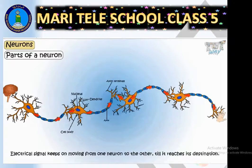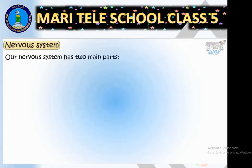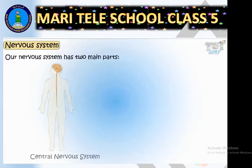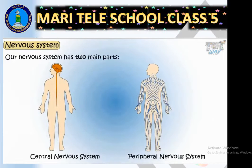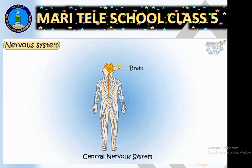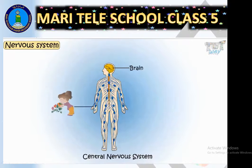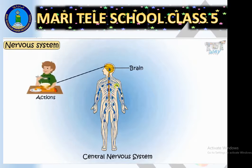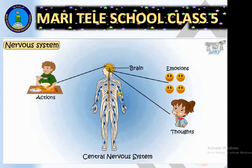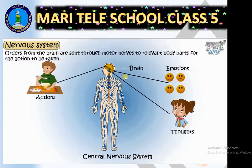The electrical signal keeps on moving from one neuron to the other until it reaches its destination. Let's revise: our nervous system has two main parts — the central nervous system and the peripheral nervous system. The central nervous system consists of the brain and the spinal cord. The brain receives messages through sensory neurons, processes them, and sends orders to different parts of the body through motor neurons.